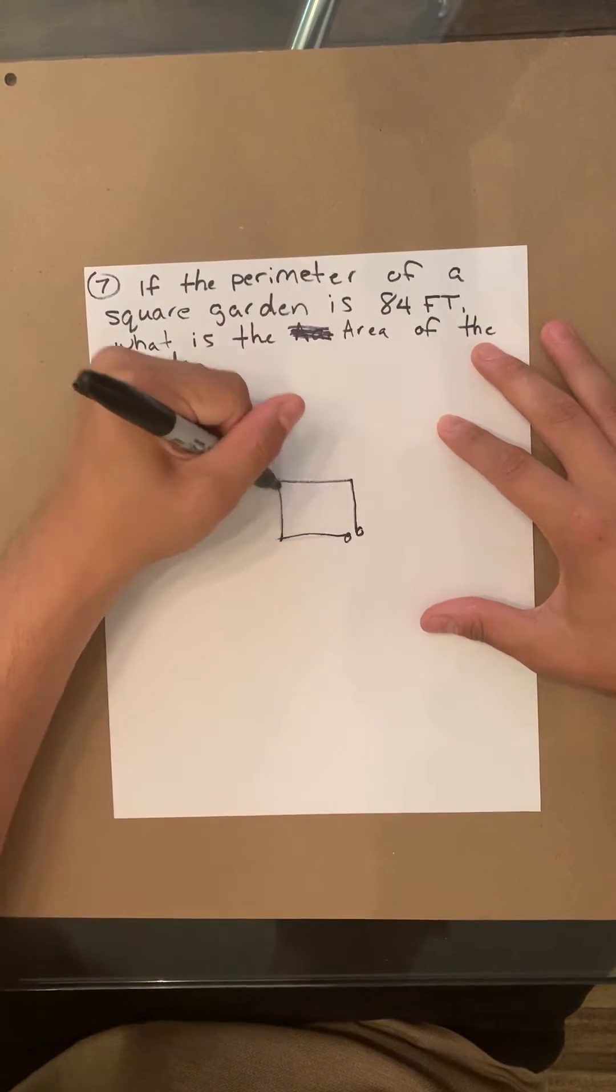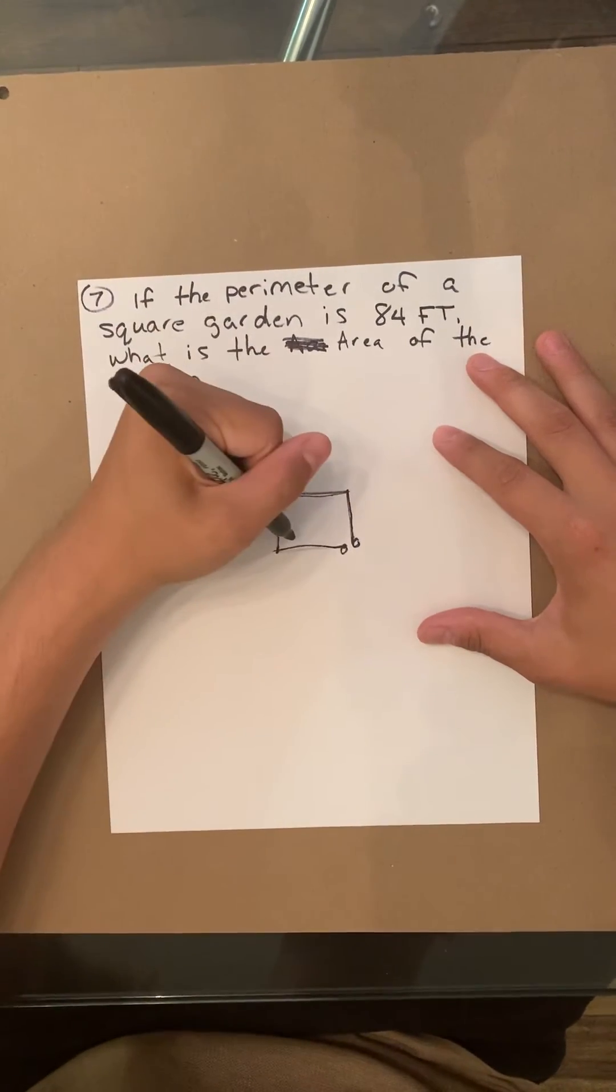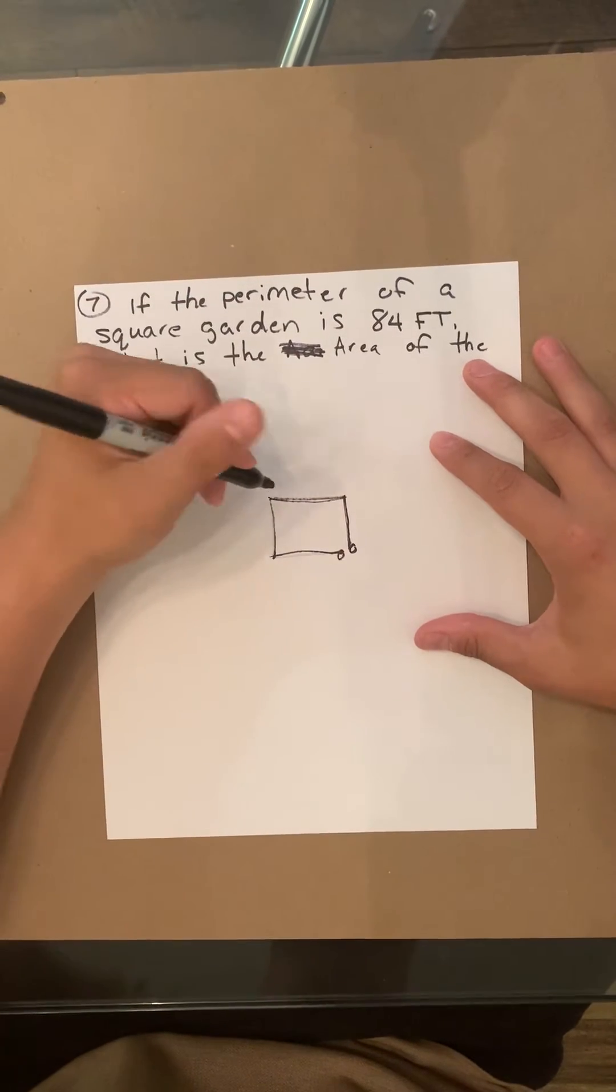Let's say you take a measuring tape and you go, boom, first measurement, second measurement, third measurement, fourth measurement. That total length of the wall that you just created is 84.